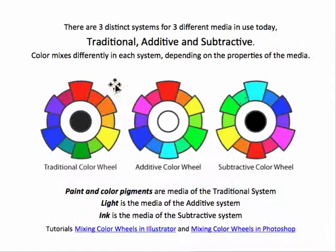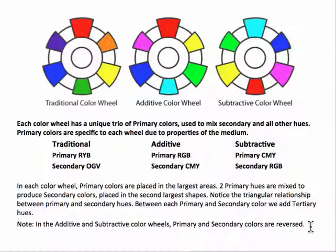There are three distinct systems in use today, used for three different media. The traditional, which applies to paint and pigments; light, which is used in the additive system for web design, color TVs, monitors, etc.; and ink, which is the subtractive system used for printing. Each color wheel has a unique set of primary colors — a trio of primary colors used to mix the secondary and all the other colors in that wheel.